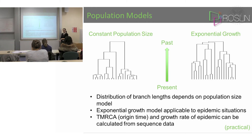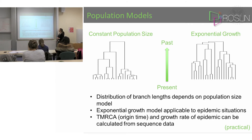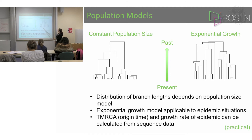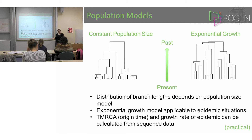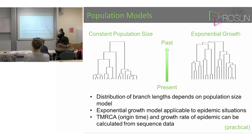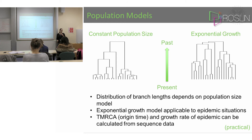The exponential growth model is important for epidemic situations. Using an exponential growth model, you can estimate the time to the most recent common ancestor of epidemic samples — essentially asking: looking at my sequence data, when did the epidemic start? You can also calculate a growth rate at the same time. So from sequence data alone you can determine when the epidemic started and how quickly it is growing. BEAST will report these in the tracer output: a growth rate value and a root height value, which is the time to the most recent common ancestor — the key quantities when analyzing an epidemic.